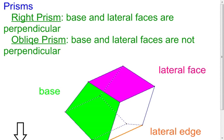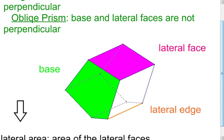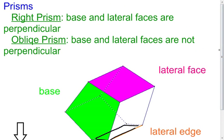In my last slide, I'm going to talk about specific types of prisms. First is the right prism: the base and the lateral faces are perpendicular — so the angle between the green base and the lateral face is a right angle. In an oblique prism, those bases and lateral faces don't make 90-degree angles; they're not perpendicular. Most of the prisms we're going to work with are going to be right prisms, but not all — we'll have a few oblique prisms as well.